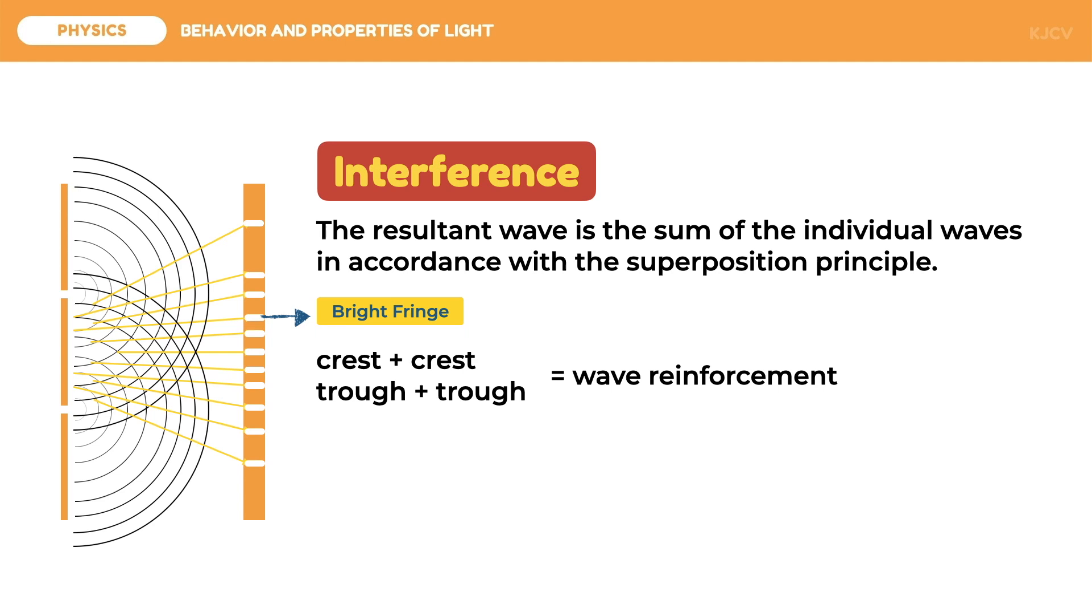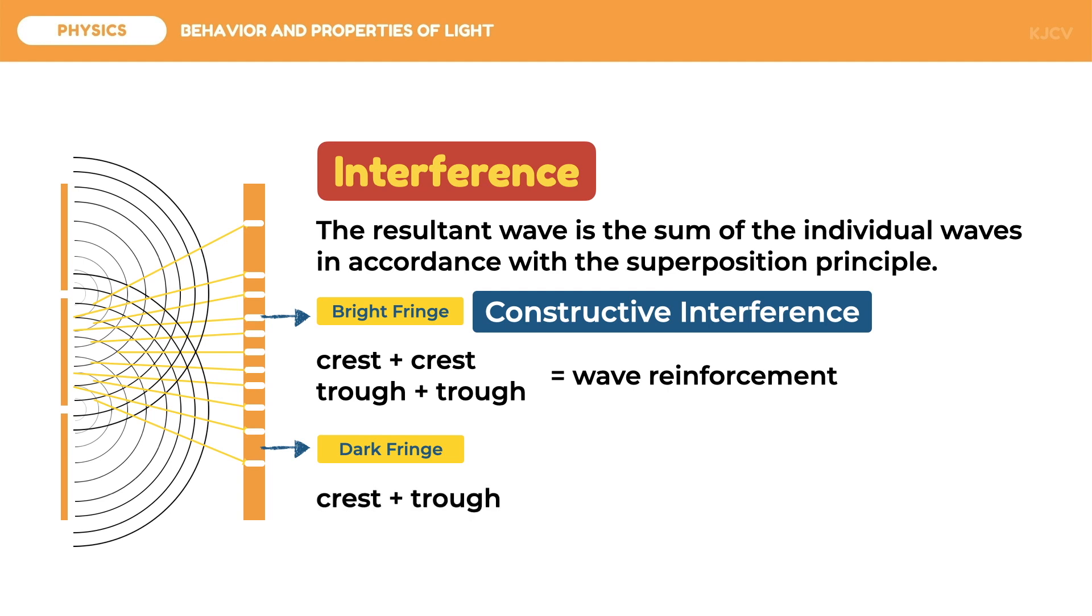Since these are similar wave parts, there is wave reinforcement or the wave is strengthened. This results in the bright spots on the screen. This is called constructive interference. On the other hand, dark fringes are created by waves overlapping different parts, particularly the crest overlaps with the trough. This results in wave cancellation. This is called destructive interference.